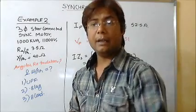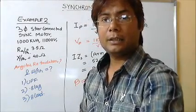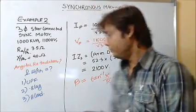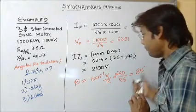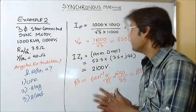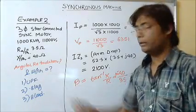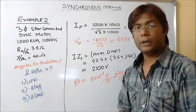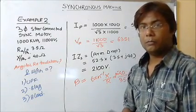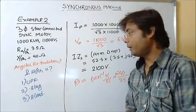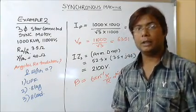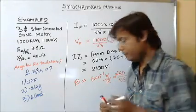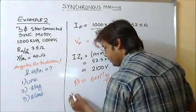Now I have to find theta. For the unity power factor case, cos φ = 1, so theta equals 0. I can directly solve for the unity power factor case first. Since theta is 0, the current I is in phase with V_P.